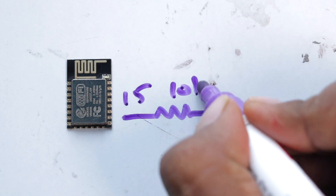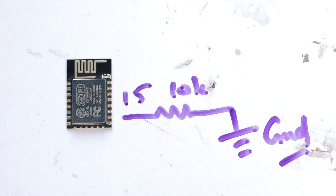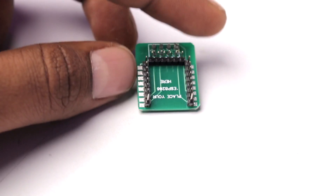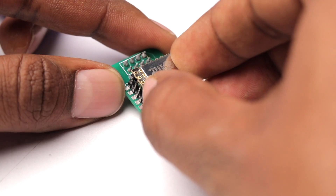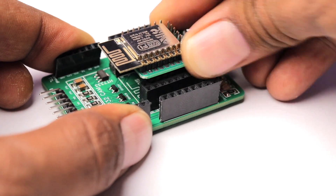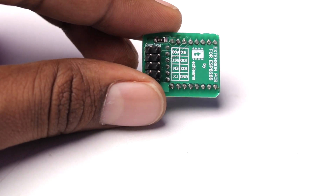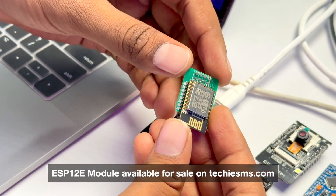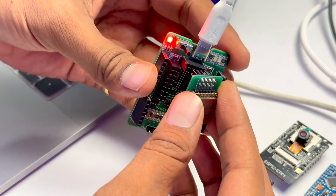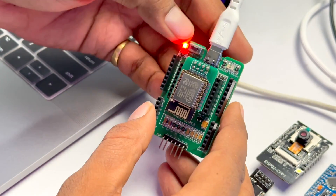Programming the ESP-01 used to be a hectic task requiring five to six wires, but now you just insert it and upload. Now it's time to show how to program the ESP8266-20 module using our programmer. The connections are mostly the same as other ESP modules, with one difference: in the ESP8266-20 module you need to connect GPIO 15 to ground with a 10k resistor to upload code successfully. But you don't need to worry about that — our extension PCB for the ESP8266-20 and 12F modules already includes that pull-down resistor. Just place the module on the extension PCB and insert that PCB under the ESP-01 programming slot.